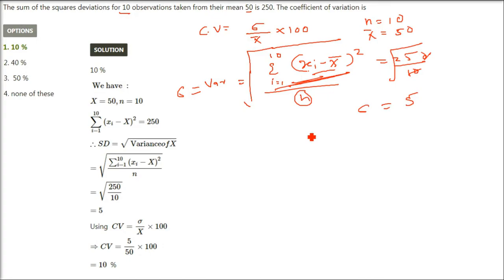Now applying the coefficient of variation formula: 5 is sigma, x bar is 50, multiplied by 100. That gives us 5/50 times 100 equals 10 percent. 10 percent is the answer.